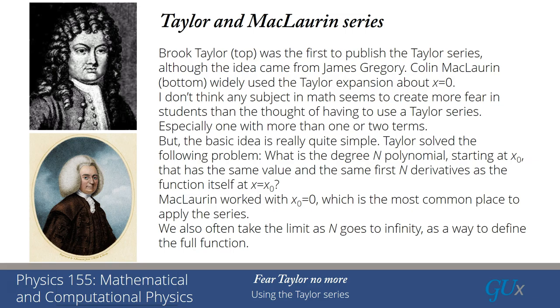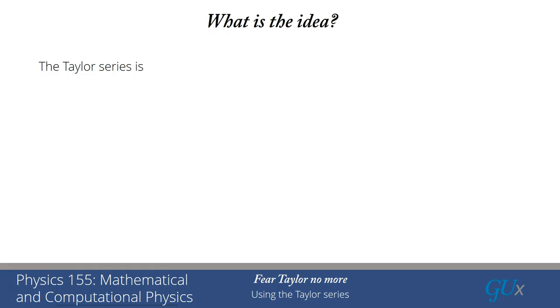Now it's very common when you look up a Taylor series expansion in a book or on a website that you'll find that the Taylor series expansion no longer looks like a polynomial because the limit n goes to infinity has been taken. And one way that you can view this is that if such a limit exists when we take the limit n goes to infinity, that's actually a way of defining what the full function would be.